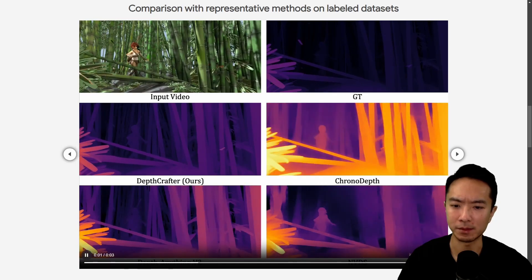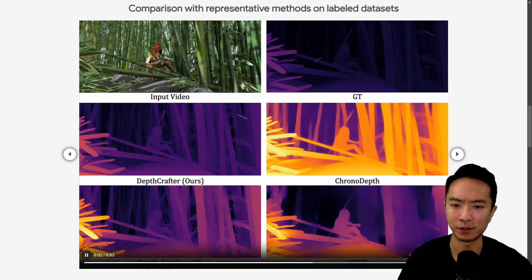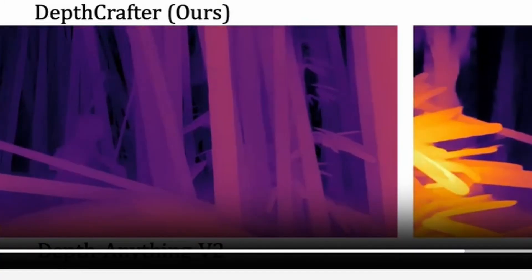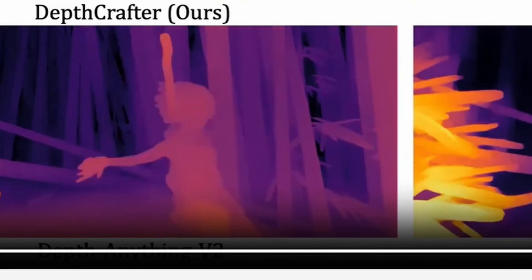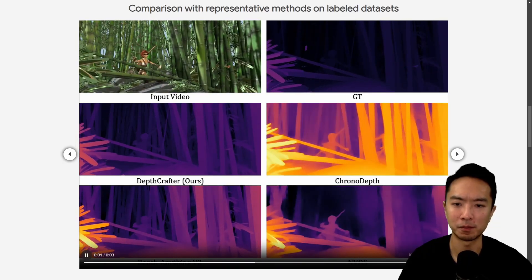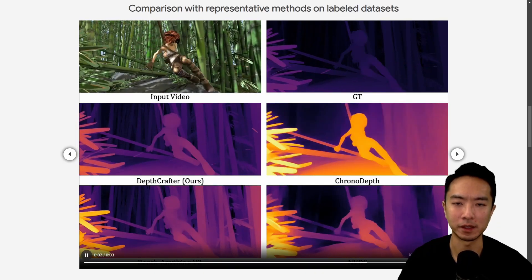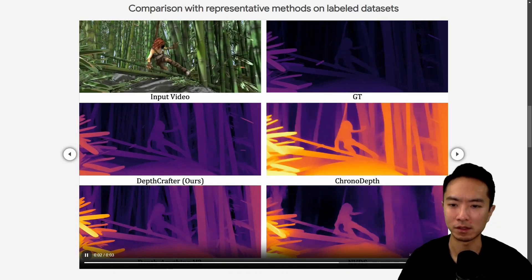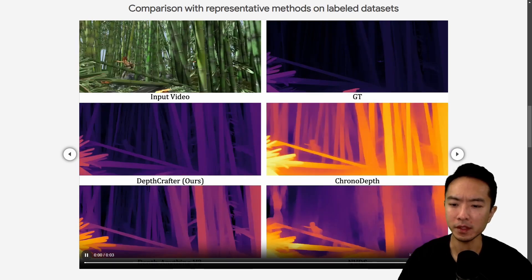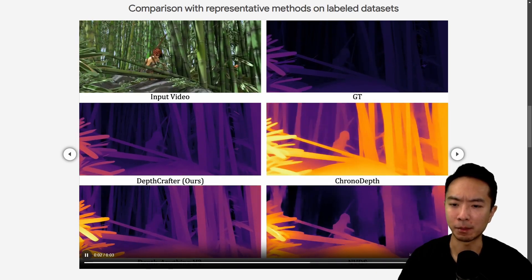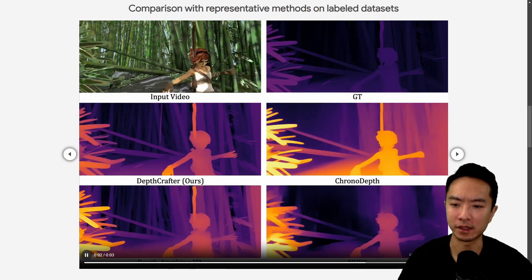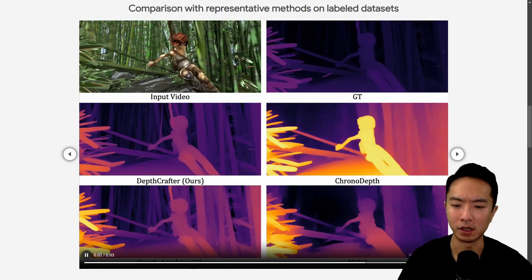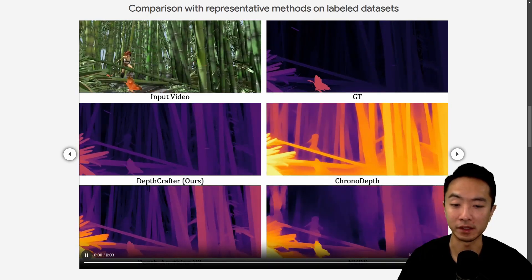You can see that in DepthAnything V2, some of the branches in the front seem to be overly bright, which may end up making it seem like one object is much closer than it really is. Whereas in DepthCrafter, you can see that the color distribution has a more realistic gradient.